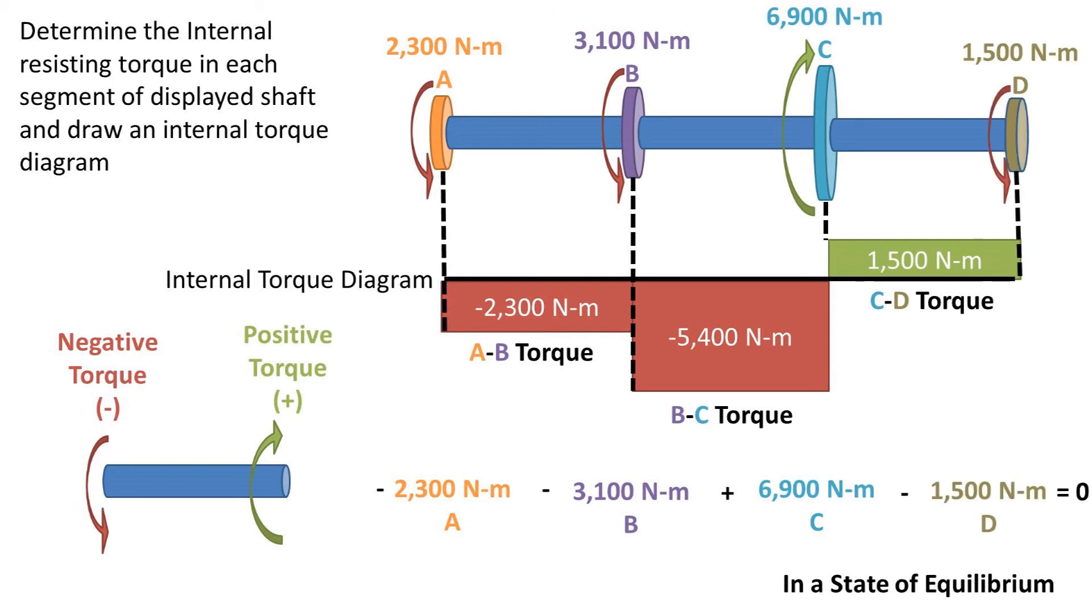The final torque at point D is negative 1500 newton meters, which when added to the torque at A, B, and C, equals zero. So the shaft is in equilibrium and everything cancels out.